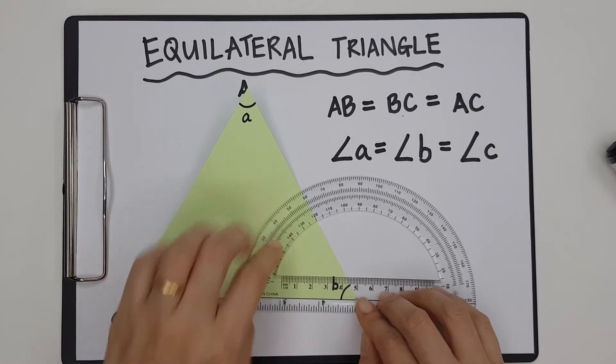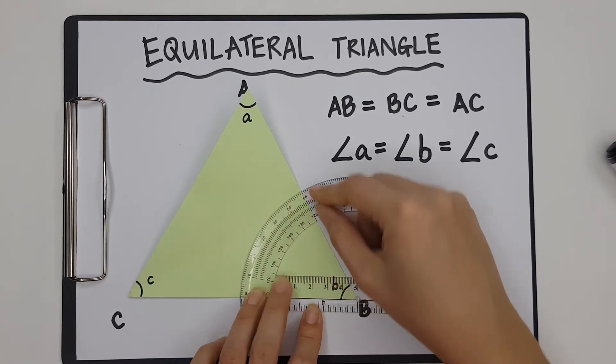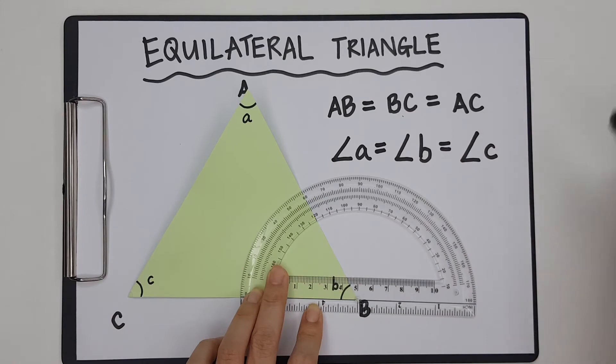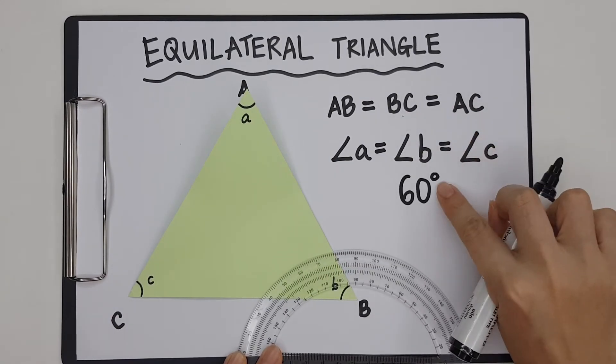Because we're starting from here, we're going to use the outer scale. And we're going to read all the way there and it is 60 degrees. That's a degree sign.